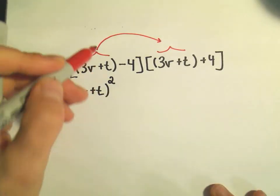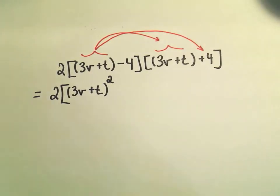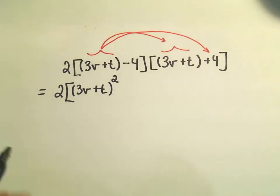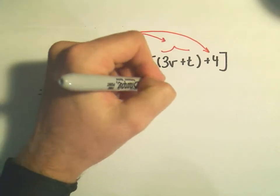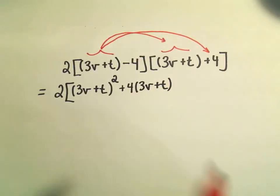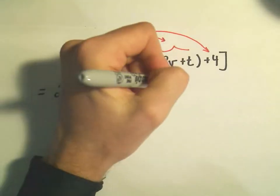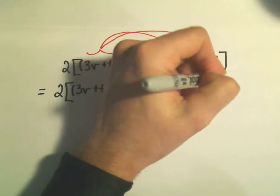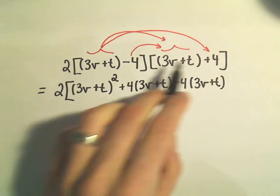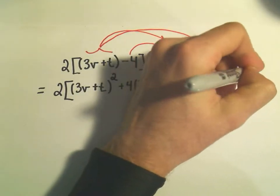Then I'm going to take the 3v plus t and multiply it by the positive 4. That would leave me with positive 4 times 3v plus t. On the inside, I'll take my negative 4 times the 3v plus t, so that will give us negative 4 times 3v plus t. And then we'll take the negative 4 times the positive 4, which would give us negative 16.